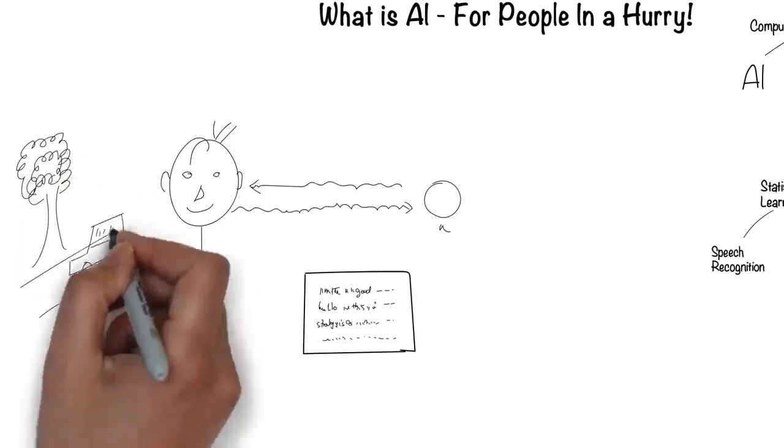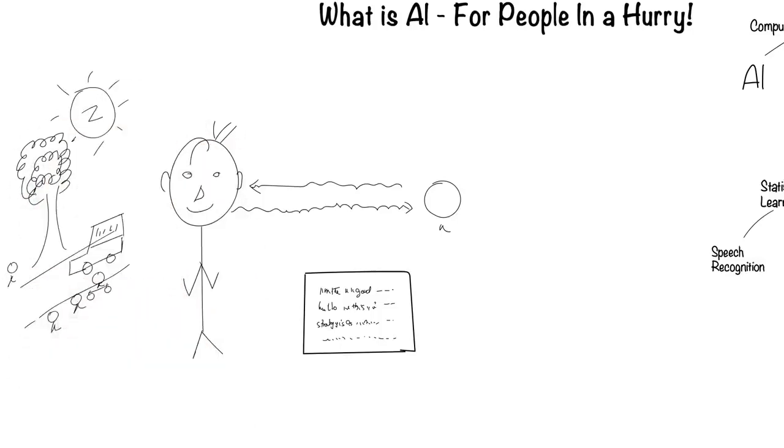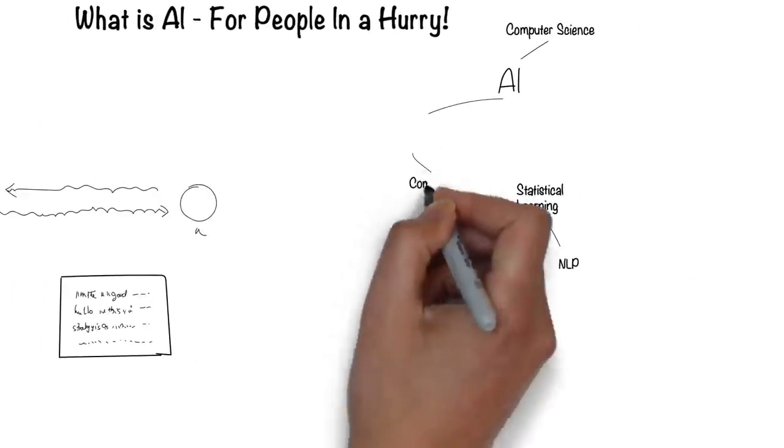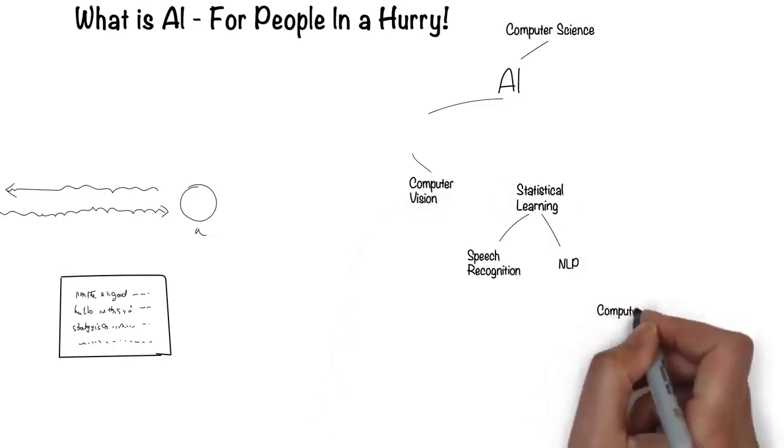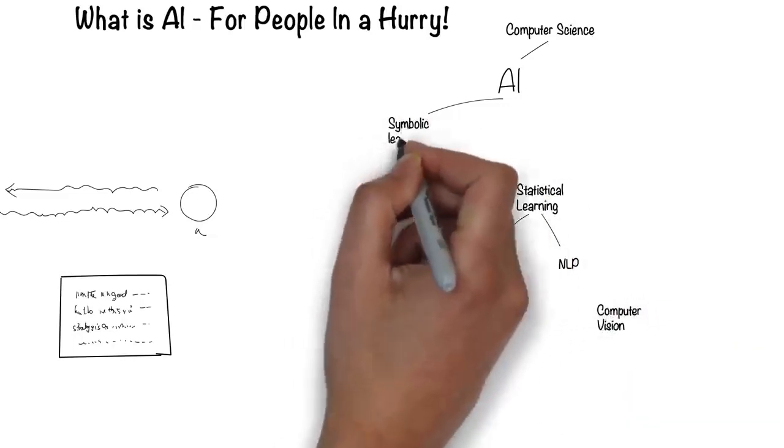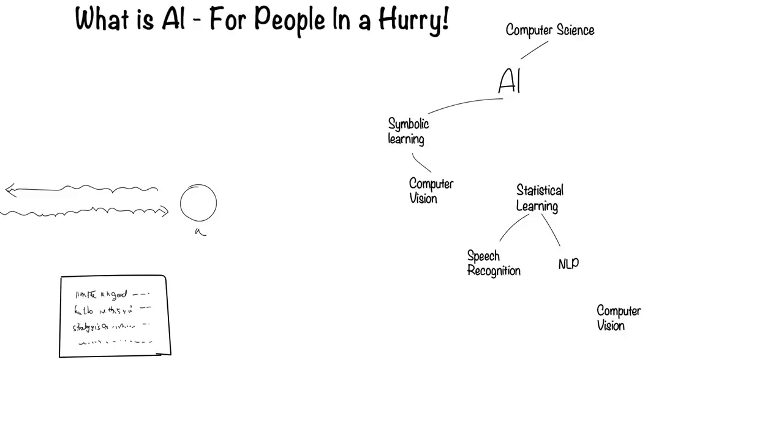Humans can see with their eyes and process what they see. This is the field of computer vision. Computer vision falls under the symbolic way for computers to process information.